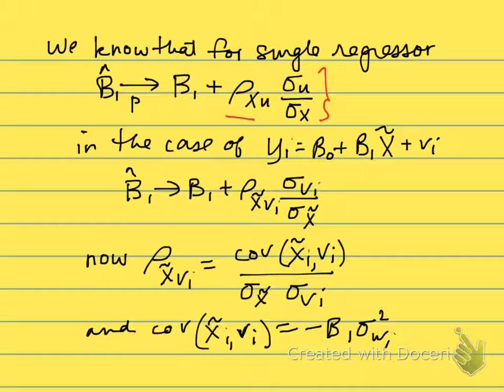So in our case, we're estimating this equation, so the bias then in the estimated coefficient, we will substitute in - we have X̃ and we have vᵢ as our explanatory variable and our error term. So this then is the bias.